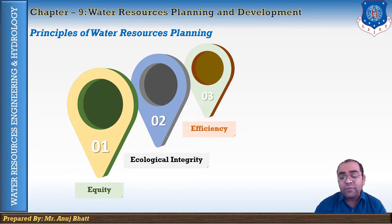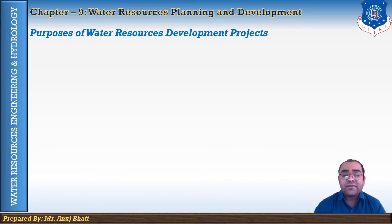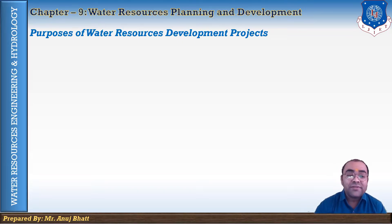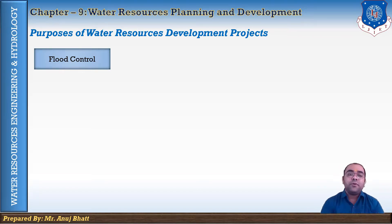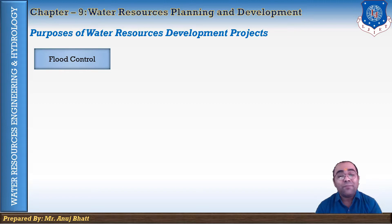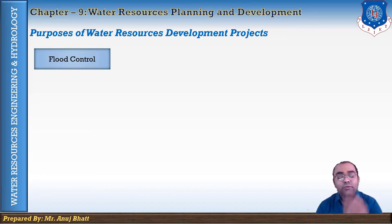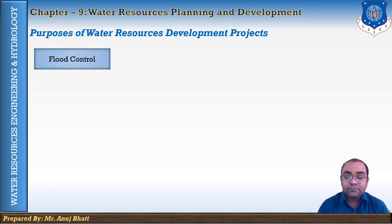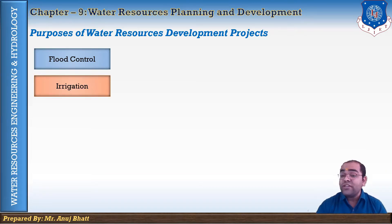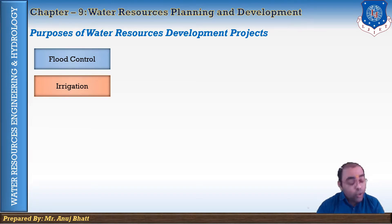Now let's discuss the purposes of water resource development projects. The first is flood control, with objectives including reduction of flood damage, protection of economic development, river regulation, recharging of groundwater, development of power, and protection of land. The second purpose is irrigation, whose primary objective is agricultural production, achieved through dams, reservoirs, valves, canals, and similar works.